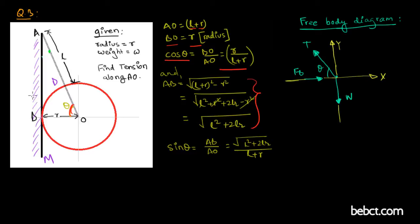Similarly, you can find out the value of AB, which is the perpendicular length, and the sine of theta is going to be this expression. That's pretty much simple.